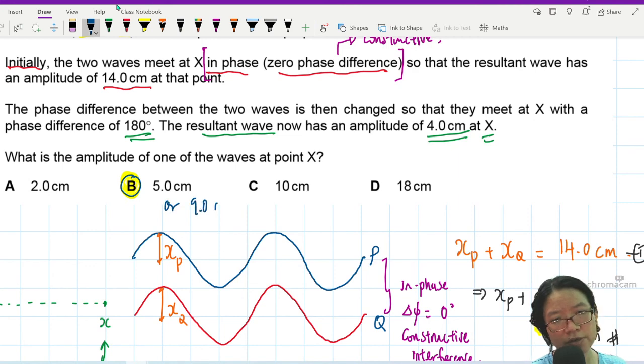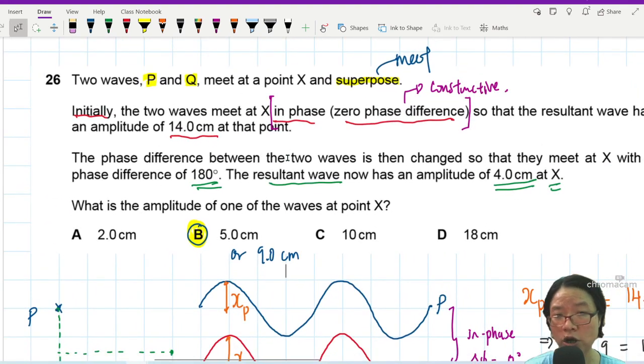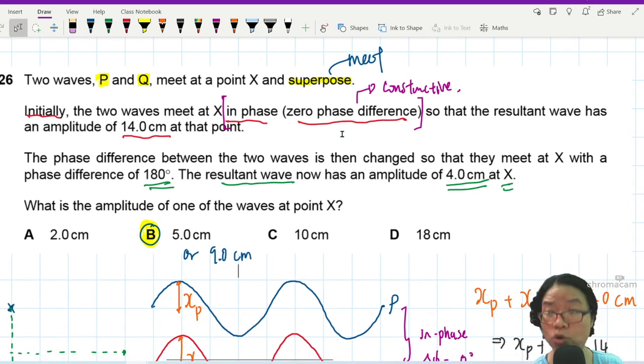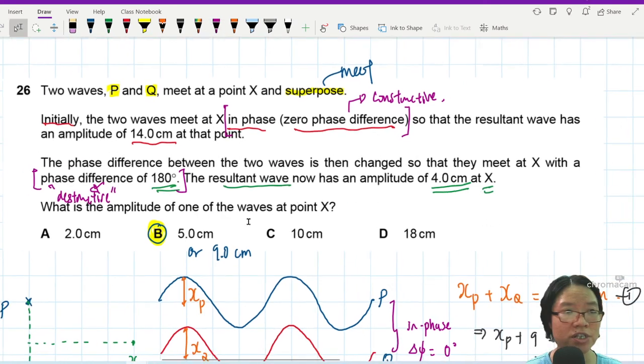Or 9.0 cm but 9.0 cm is not the option here. So that's it for this question, a little bit challenging because you really need to understand the conditions for interference and what happens when two waves meet. So sometimes when they give you like paragraph like this take your time to slowly read and try to understand. Don't rush questions like this, try to understand what they mean meeting in phase you add the amplitude, meeting out of phase here phase difference of 180 this one is destructive, not a clean cancellation but it's still subtraction. So that's it for this question 26.